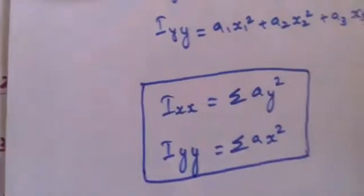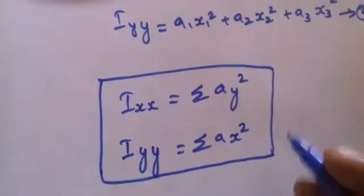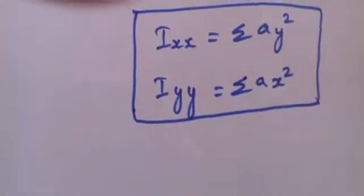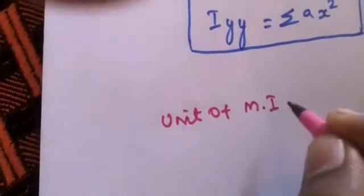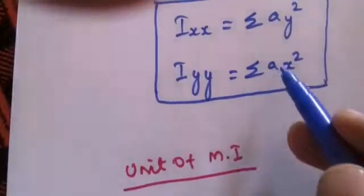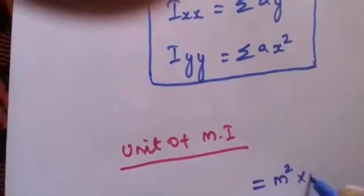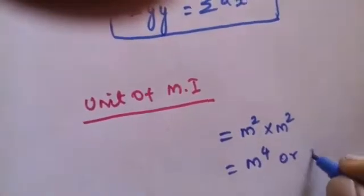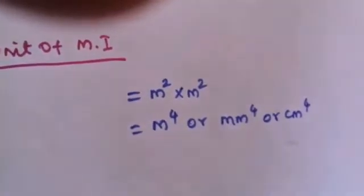Simplifying, Ixx equal to summation of a y squared. Iyy is equal to summation of a x squared. This is moment of inertia about x axis and y axis respectively. This is distance squared, so distance meter, and again distance squared, so into m squared, so unit is meter power 4 or millimeter power 4 or centimeter power 4.